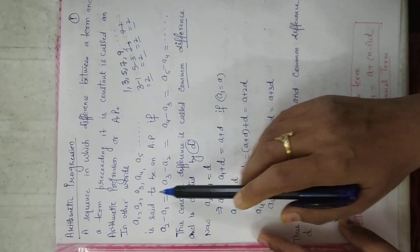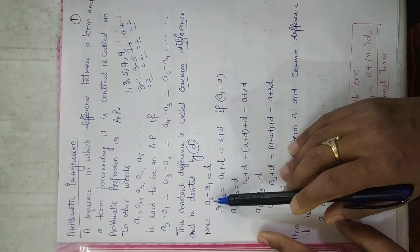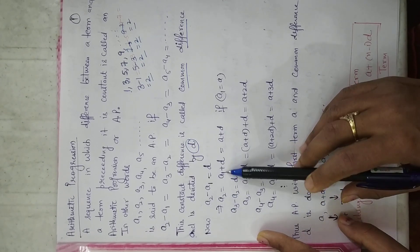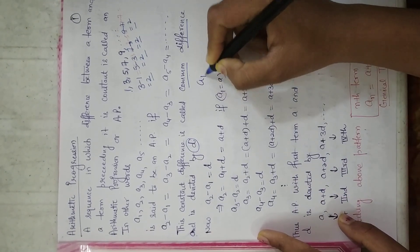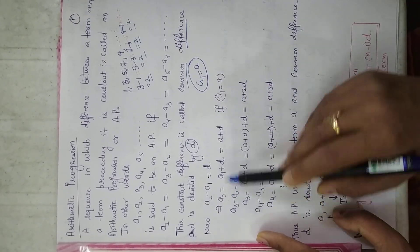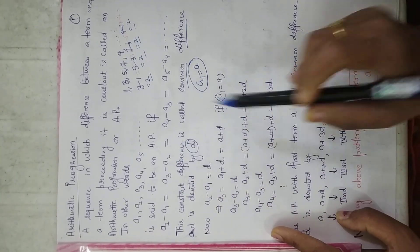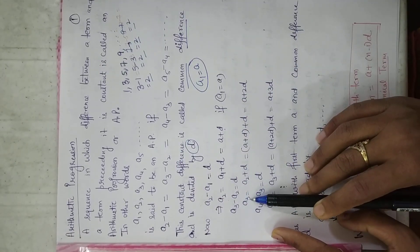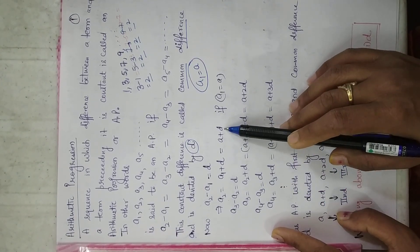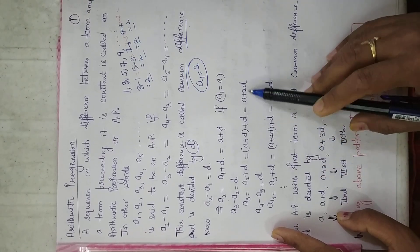Now, a2 minus a1 is d, so a2 is equal to a1 plus d. If we suppose that the first term of the AP is a, then a2 is equal to a plus d. Now, a3 minus a2 is also equal to d, so a3 can be written as a2 plus d. Substituting a2 as a plus d, we get a plus d plus d, which is a plus 2d.